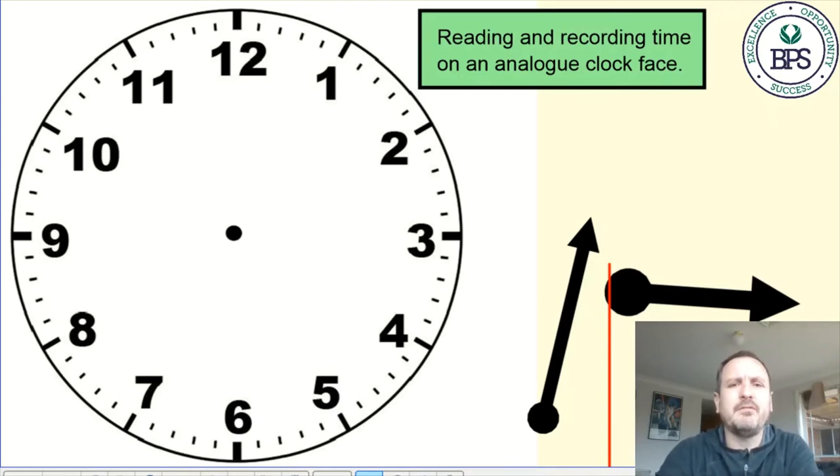Hi everyone, today I want to talk to you about reading and recording time using an analogue clock face. An analogue clock face has numbers 1 to 12 around the outside and quite often has small marks between each of those numbers.